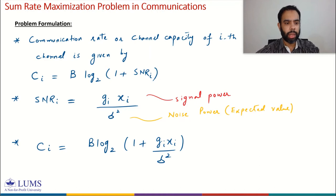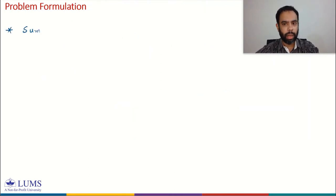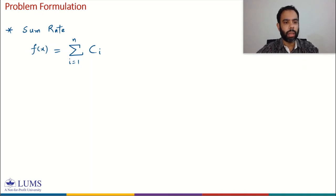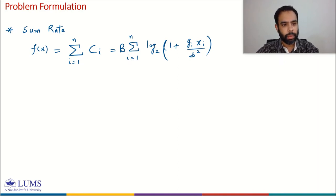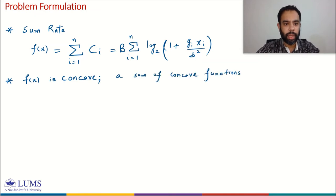Substituting the SNR, the channel rate for the i-th channel is B · log(1 + gᵢxᵢ / σ²). The sum rate f(x) is the sum of all channel rates: f(x) = B · Σᵢ log(1 + gᵢxᵢ / σ²), with B taken outside the summation since it is the same for every channel. This function is concave because it is a sum of concave log functions.